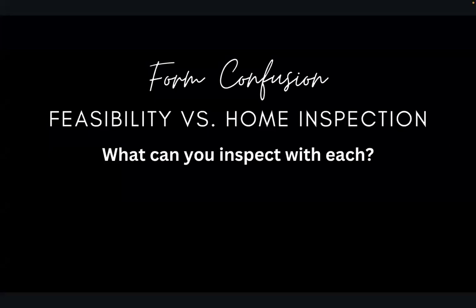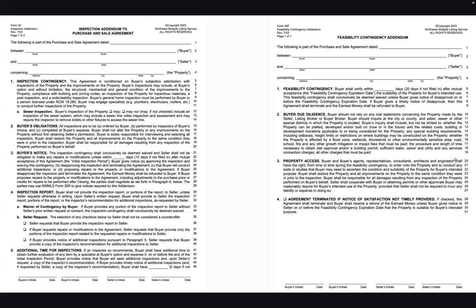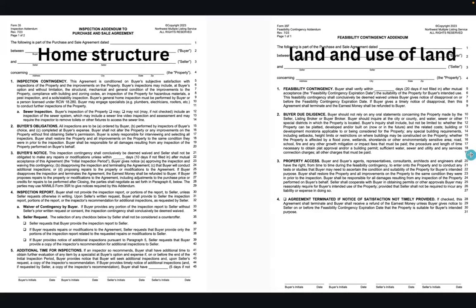Another area of confusion is the home inspection contingency and the feasibility contingency. If you're doing a home inspection on a large piece of land, the home inspection contingency is for the home — the structure, the things inside the home, specifically within the walls. It's not even for the systems attached to the home. You will additionally need things like well inspection and septic inspection for anything outside the walls of the structure. And if you want to make sure that the land use is going to be available for what you want, you'll also want the addition of a feasibility contingency.